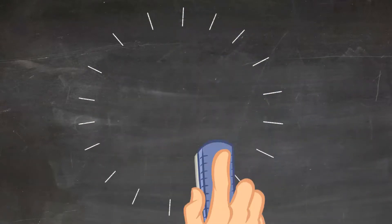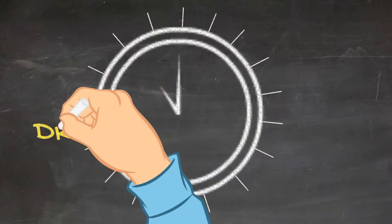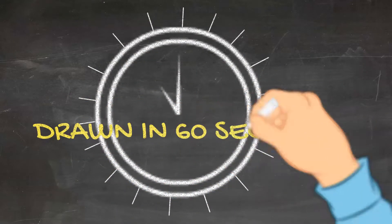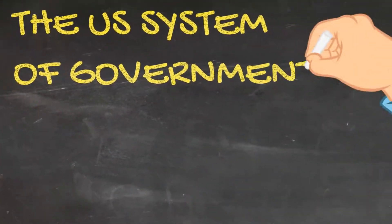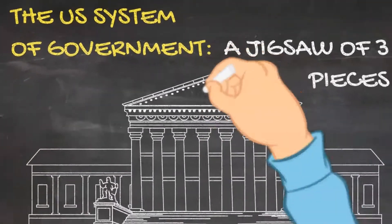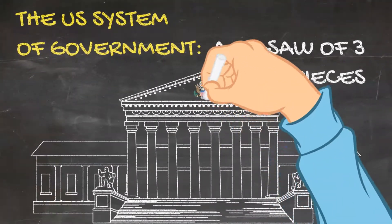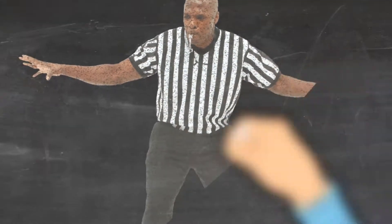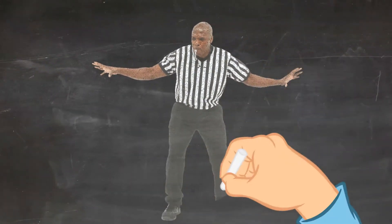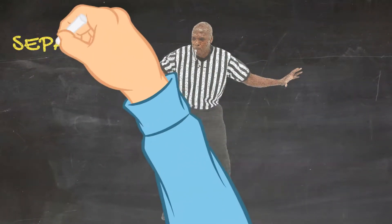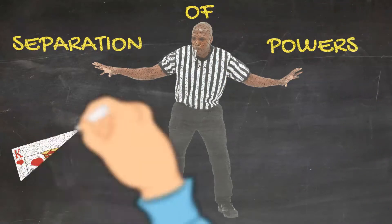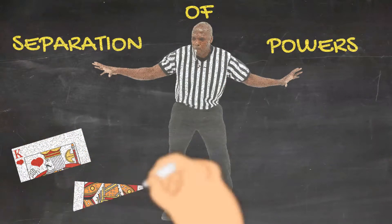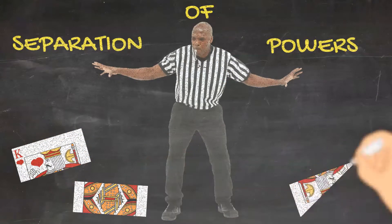Welcome to Drawn in 60 Seconds, where I give you a rapid run-through of a topic in history. Today I'm going to take you through part three of the US system of government. Don't forget from parts one and two that the founding fathers thought it best to create a system which separated the powers of government into three parts to avoid the potential tyranny of a monarch.